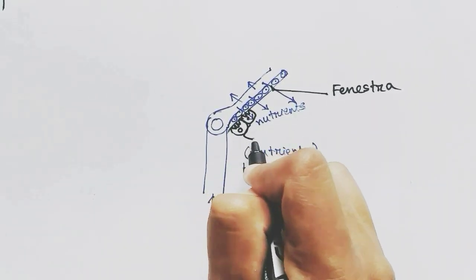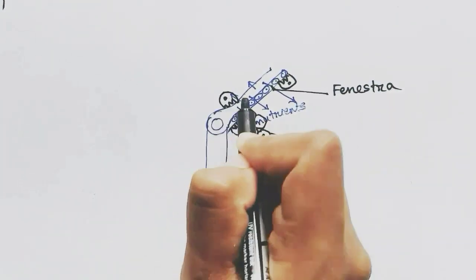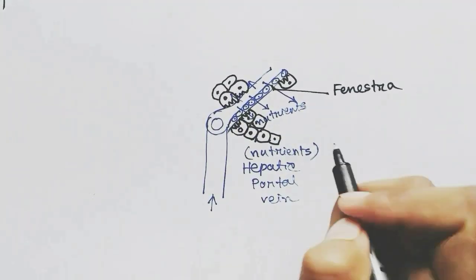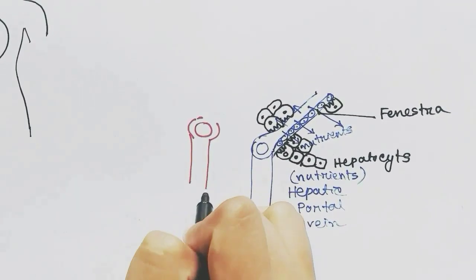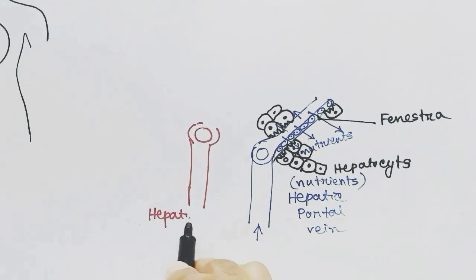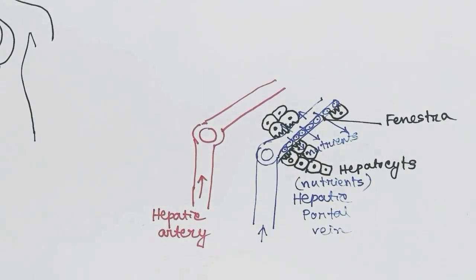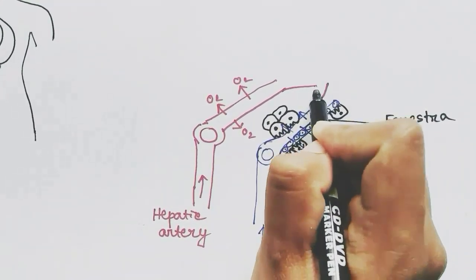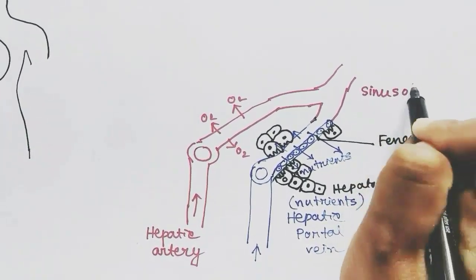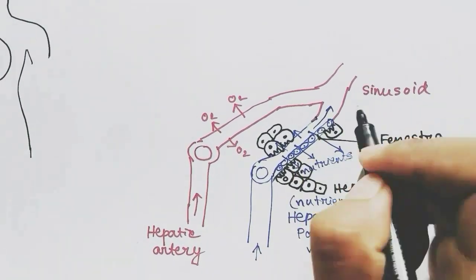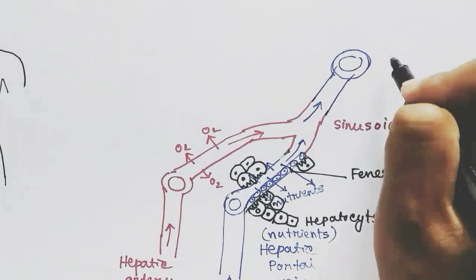The hepatocytes adjacent to the sinusoids have some microvilli facing towards the sinusoids. The hepatic artery, bringing oxygenated blood, will also form sinusoids and transfer oxygen to the cells, and will eventually meet the hepatic portal vein to form common sinusoids. All the blood will then run towards the central vein.